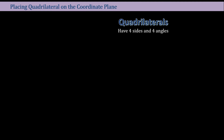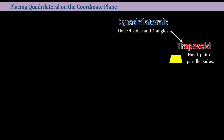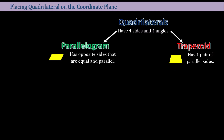Now let's discuss what quadrilaterals are. A quadrilateral is a geometric figure that has four sides and four angles. It could be a trapezoid, which has one pair of parallel sides. Or it could be a parallelogram — a parallelogram has opposite sides that are equal and parallel. That's the difference between a parallelogram and a trapezoid.